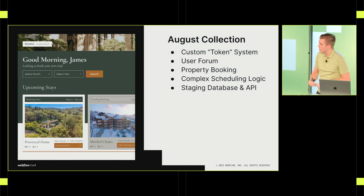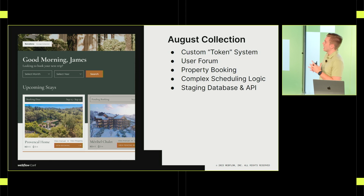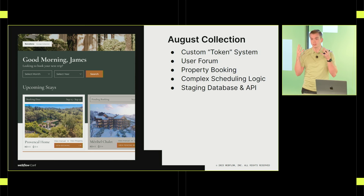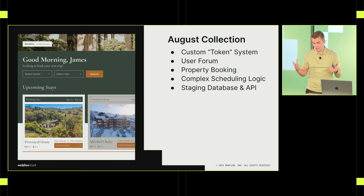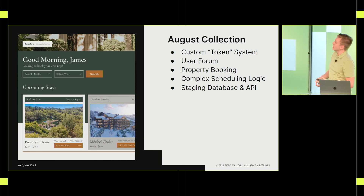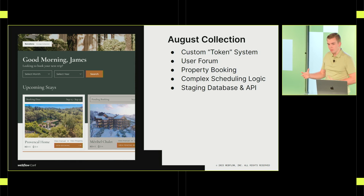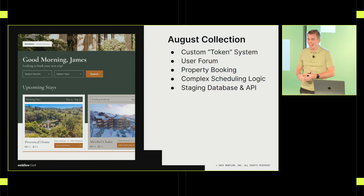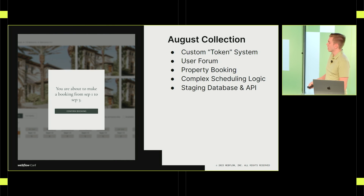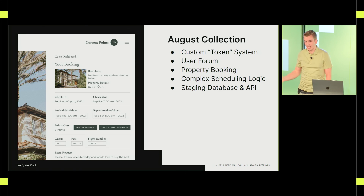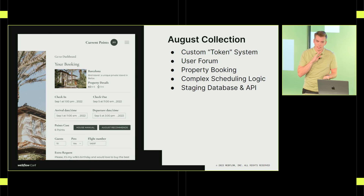Lastly, we have August Collection, one of our older clients. Their core product allows you to buy a share within a corporate holding account of multiple properties — you buy one share, you own roughly 1/20th of that property, and you can book a vacation at any one of those properties. To do that, we built a custom token system. Every quarter, or whatever cadence they use, they release tokens to their users who can then book property stays. There's a custom user form, complex scheduling logic, and we use a staging database and API. Similar to GitHub with Xano, we maintain a staging environment for testing on the Webflow IO domain — including both front-end design testing and full back-end testing — and then push to production when ready.